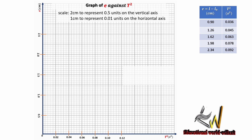We now move to the graph plot — a graph of extension (e) against T². The scale used is 2 cm to represent 0.5 units on the vertical axis, and 1 cm to represent 0.01 units on the horizontal axis. I have made a separate video on how to choose your scale, so refer to that for guidance on how to plot graphs in maths and physics.